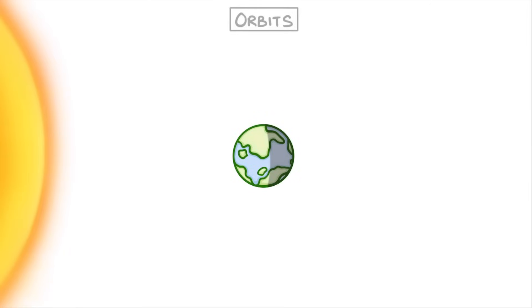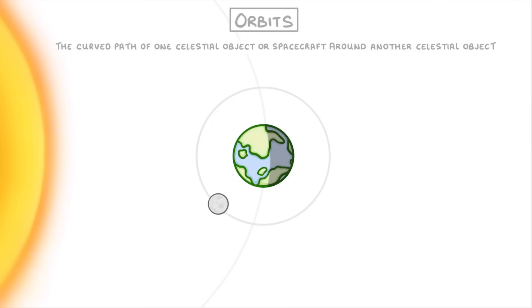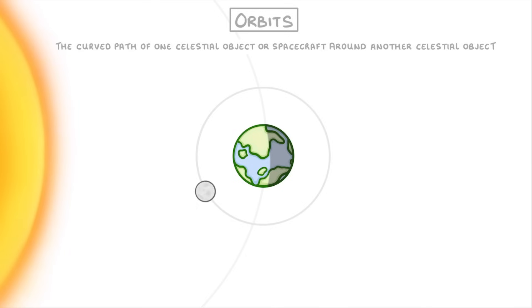Today we're going to take a quick look at orbits. We can describe an orbit as the curved path of one celestial object or spacecraft around another celestial object. So this could be the Earth orbiting the Sun or the Moon orbiting the Earth. The question we're going to try and answer during this video is to explain why objects actually orbit like this, rather than just flying off in a straight line or being pulled in towards the object that they're spinning around.